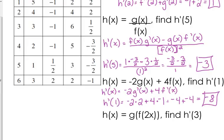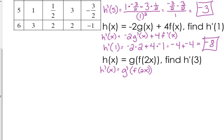The last one is a big-time chain rule. h prime of x is equal to the derivative of the outside — we start with g prime — we don't change anything else — times the derivative of the inside, so that's f prime of 2x — we don't change anything else — and then there's still another inside, so we have to multiply by the derivative of that. The derivative of 2x is 2. This is more like one of our trig ones where we've got sine cubed of 2x — exponent, trig, angle — same kind of deal: outside function, inside function, function inside the function. Three steps.